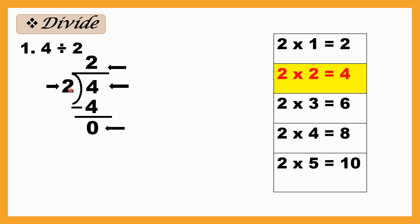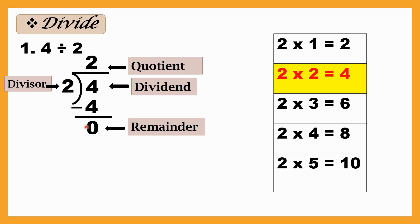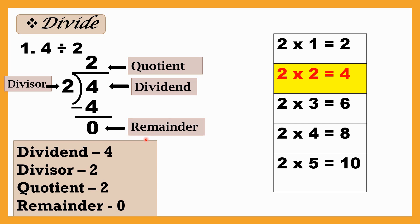Now let's name these numbers. This 4 is called the dividend. This 2 (outside) is called the divisor. This 2 on top is called the quotient. And this 0 is called the remainder. So: dividend is 4, divisor is 2, quotient is 2, and remainder is 0.